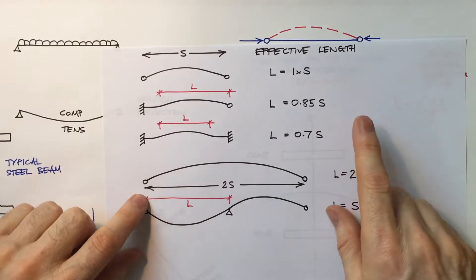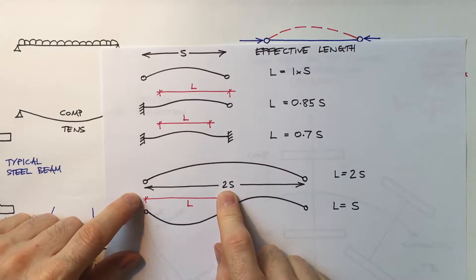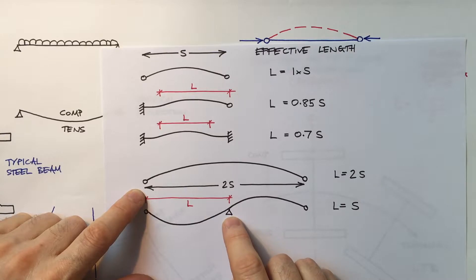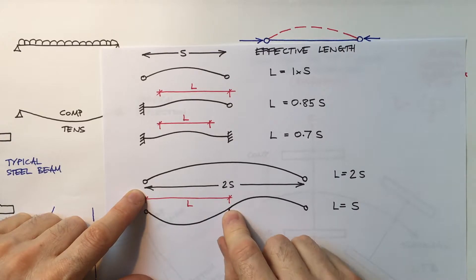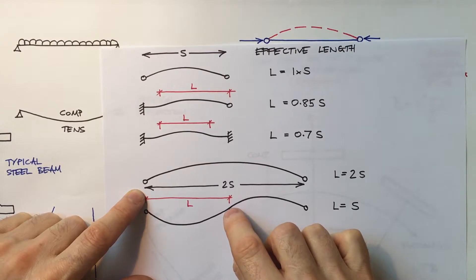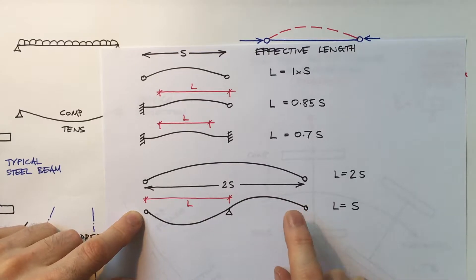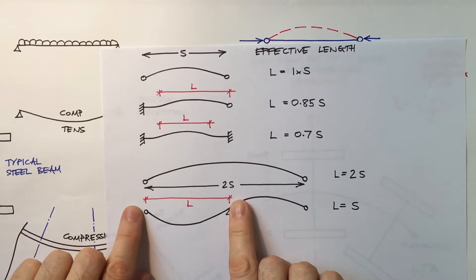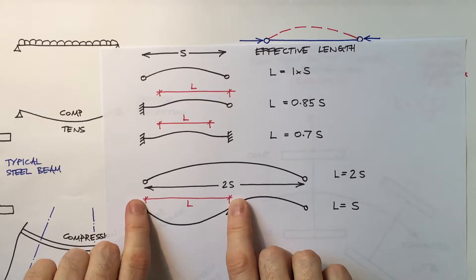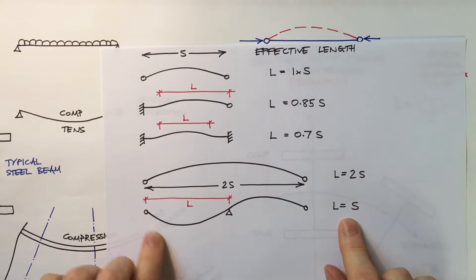How about a member that's particularly long? This one is 2S long, but at its centre I've now restrained it in position but not in direction. You can see that this is a potential buckling shape, and so the effective length of this would be just like buckling a member of length S, so L equals S.